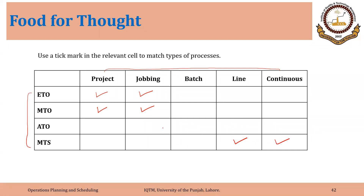Assemble-to-order organizations are mostly using batch processes. So if you have understood this matrix, I hope you have understood the types of processes based on these two factors: variety and volume, and point of customer order.